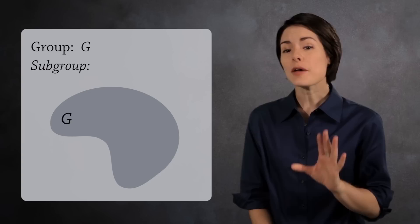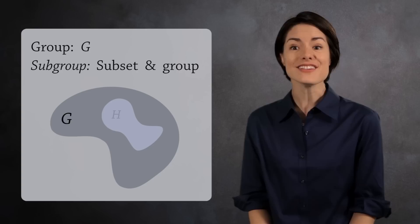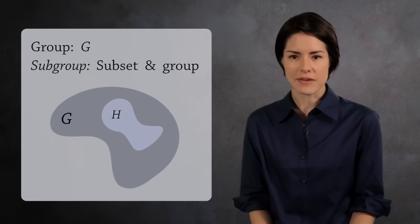A subgroup of G is a subset that is also a group. A common letter used for a subgroup is H since, well, H comes after G in the alphabet. Hey, don't ever say mathematicians aren't predictable.